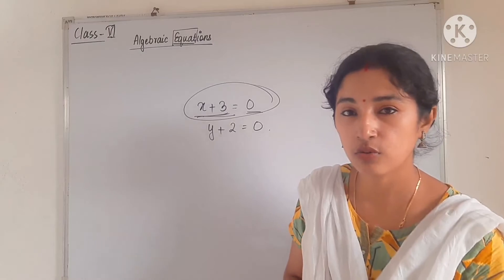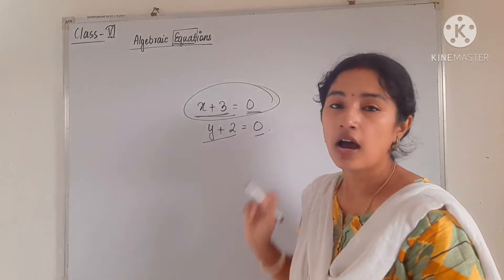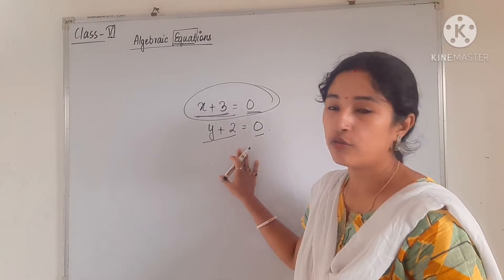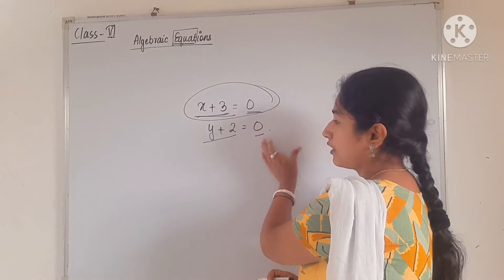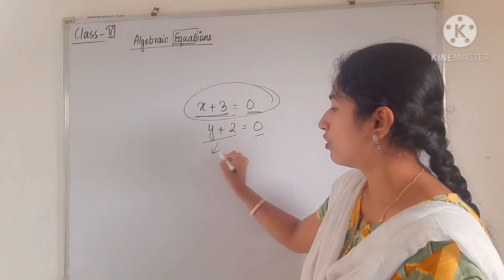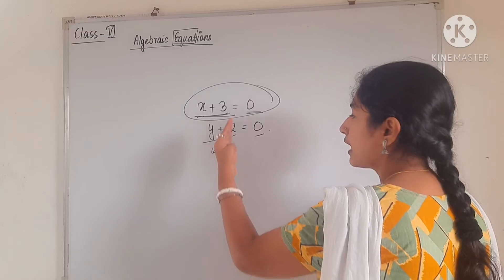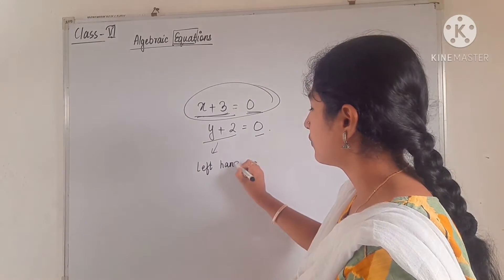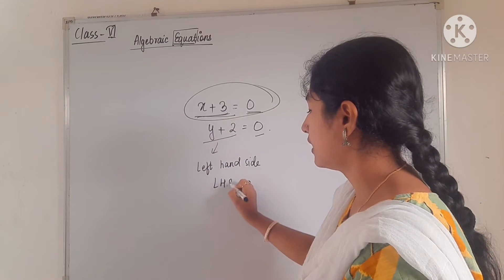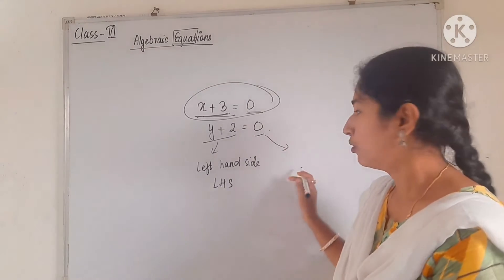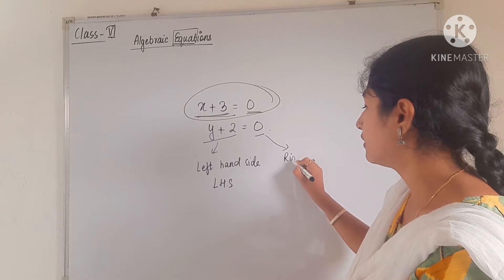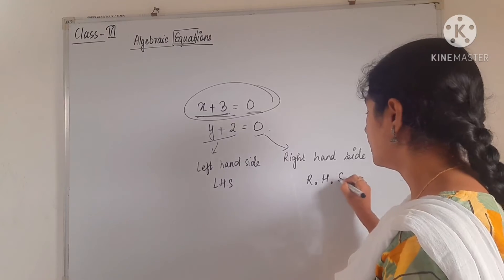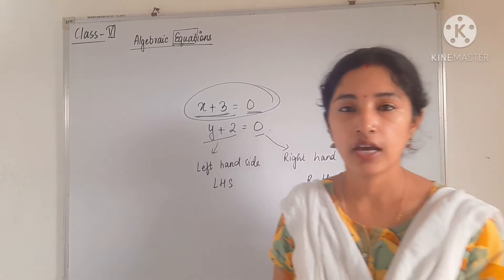So x plus 3 and 0 are the members of this equation. Similarly, y plus 2 and 0 are the members of the equation y plus 2 equals 0. These two sides are called the left hand side, or LHS, and the right hand side, or RHS. These are the two members of an algebraic equation.